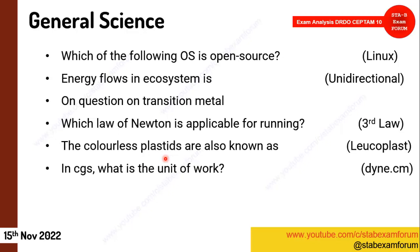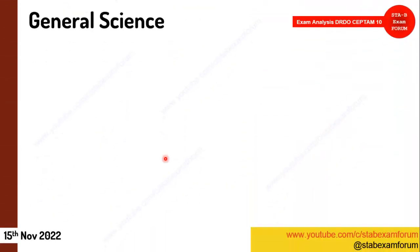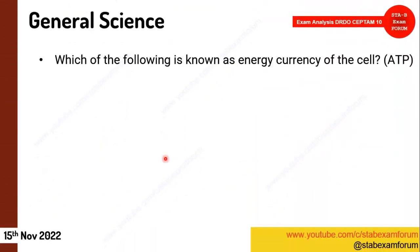One question on the CGS unit of work, and the correct formula for power — P = VI was the correct answer. Then a very simple one: what is the energy currency of the cell? That is ATP.